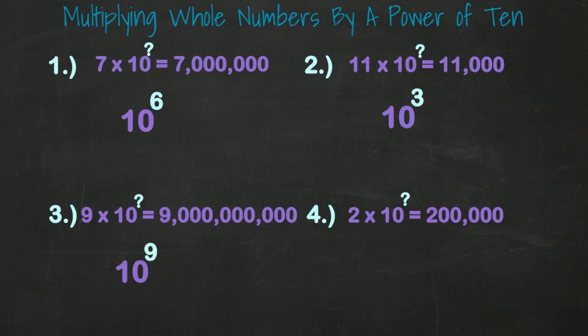And finally, 2 times 10 to what power is 200,000? Five zeros means 10 to the 5th power.